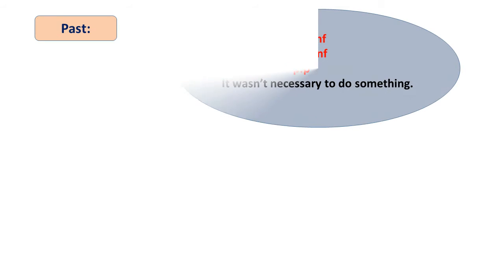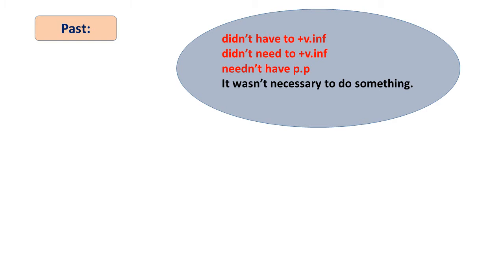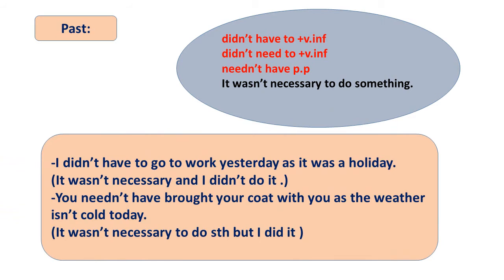In the past, we use 'didn't have to' or 'didn't need to' plus the infinitive, or 'needn't have + past participle,' when something wasn't necessary. There is a difference: 'didn't have to / didn't need to' means it wasn't necessary and we didn't do it — for example, 'I didn't have to go to work yesterday as it was a holiday.' But 'needn't have + past participle' means it wasn't necessary but we did it anyway — for example, 'you needn't have brought your coat, the weather isn't cold.'